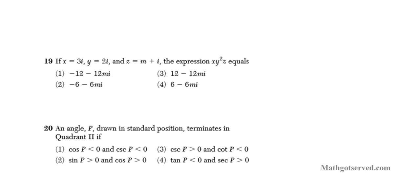Let's take a look at question number 19. We are asked to compute xy²z. If x is 3i, y is 2i, and z is m plus i. So what you want to remember is that i² equals negative 1. Don't forget that.